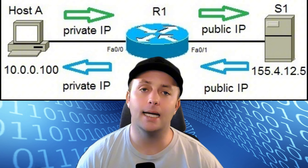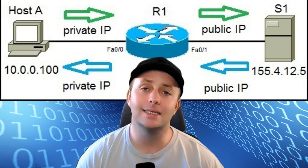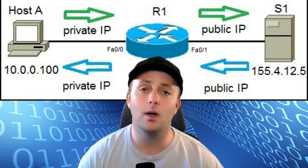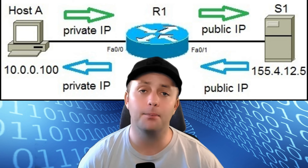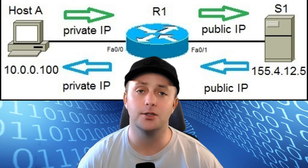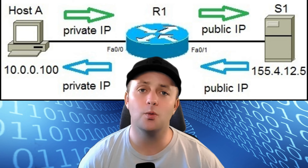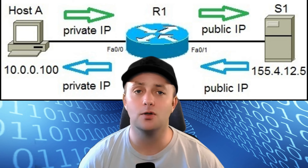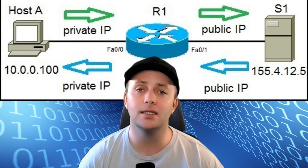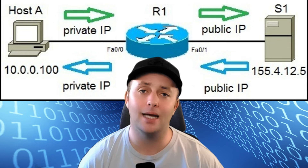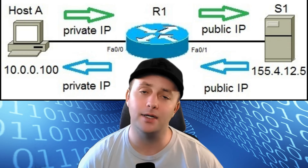Let's take a closer look at the different types of NAT. Static NAT is the simplest type. In static NAT, there's a one-to-one mapping between a private IP address and a public IP address. This is often used when you want a device on your local network, like a server, to always be accessible from the internet using the same public IP address every time.